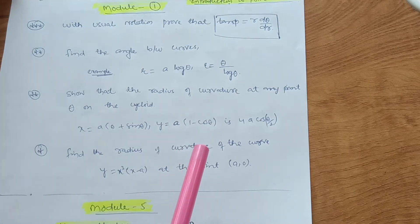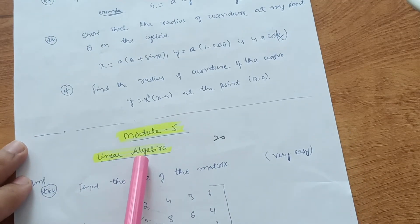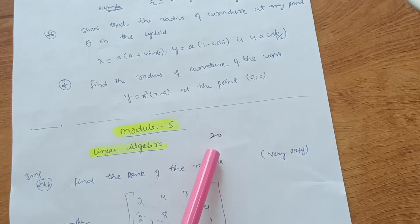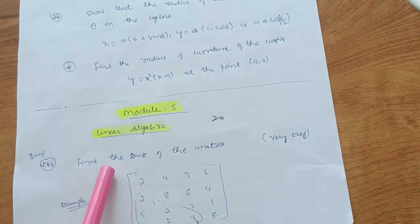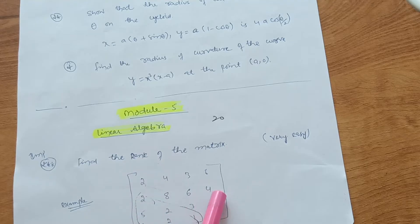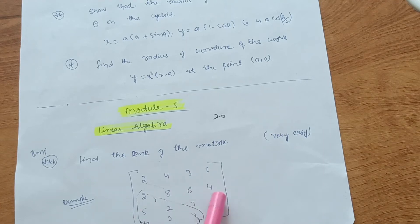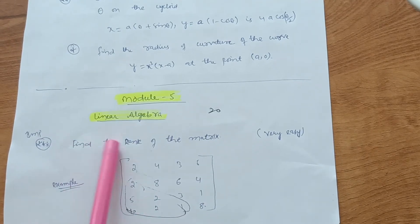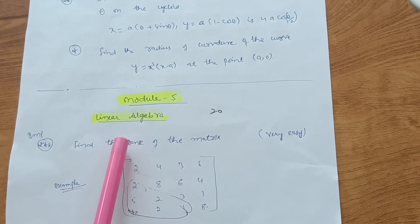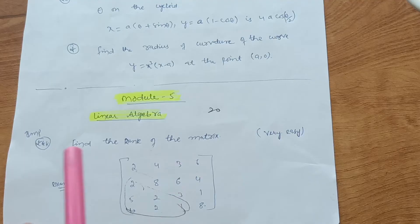The module from which you can easily score 20 marks is Module 5 — Linear Algebra. Those 20 marks are just in your pocket if you practice this module. The most important question always asked in VTU examinations is: find the rank of a matrix. For example, a matrix like [2, 2, 4, 3; 6, 2, 8, 6; 4, 5, 2, 3; 1, 10, 2, 1, 8]. It is a very easy question — only three to four steps for the answer.